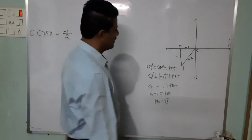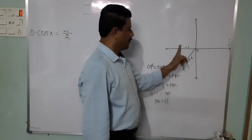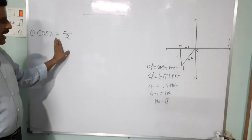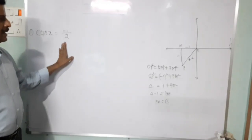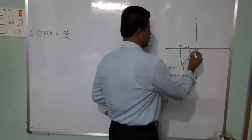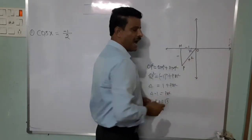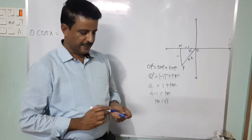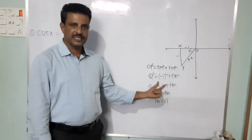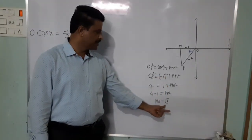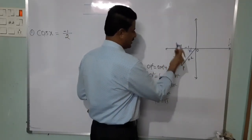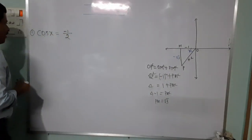In the third quadrant, draw triangle OPM. According to the definition, cos x equals adjacent by hypotenuse. The adjacent side is minus 1 and the hypotenuse is 2. Using the Pythagoras theorem — as explained yesterday — PM equals root 3. So write minus root 3 here, then we write all the ratios.